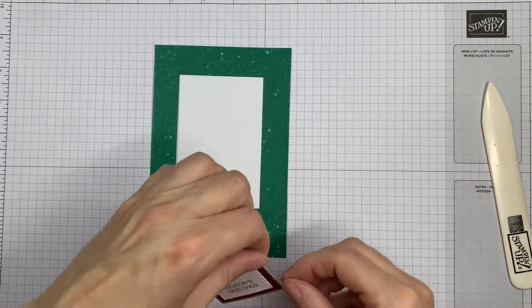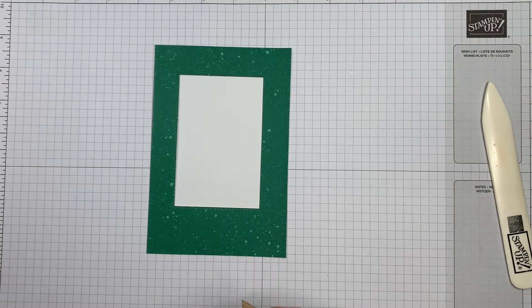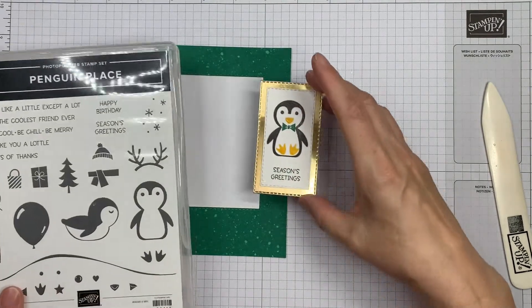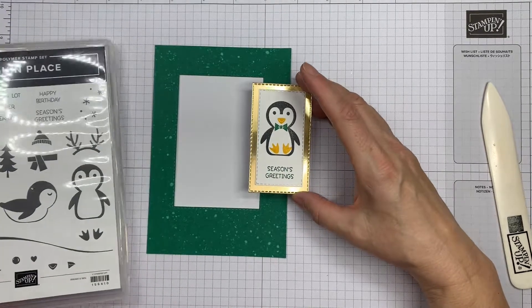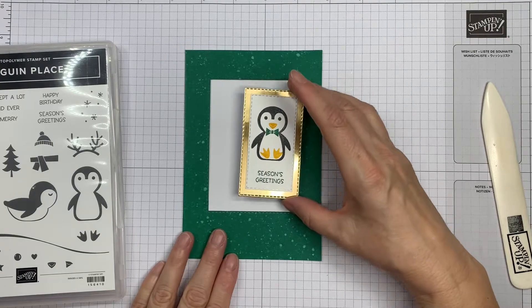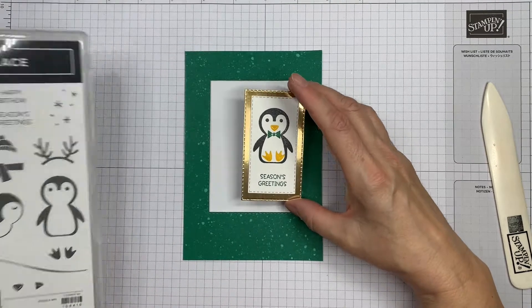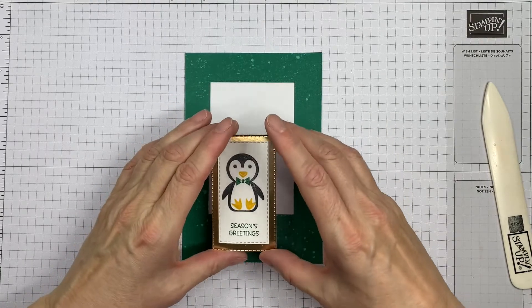And then this—I've been using Penguin Place to stamp my little penguin on the front, giving him a bow tie to match the color of the card behind. And then I've gone with gold because I think the green and gold makes a nice Christmas combo.